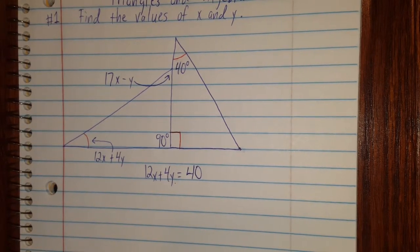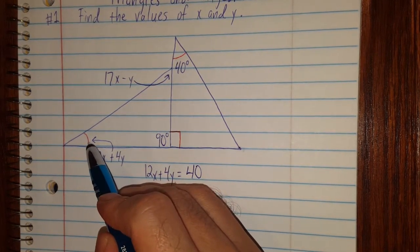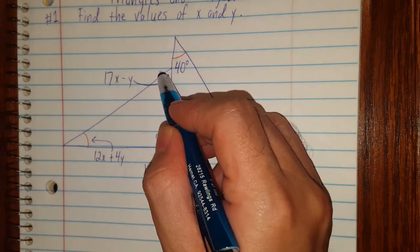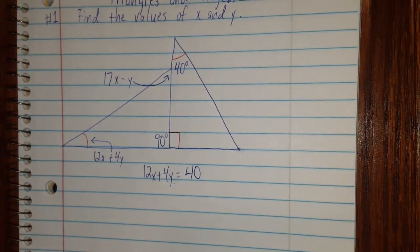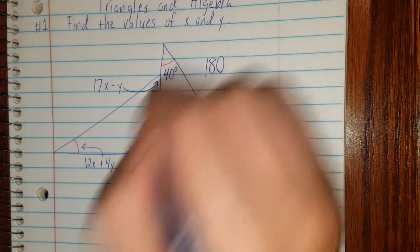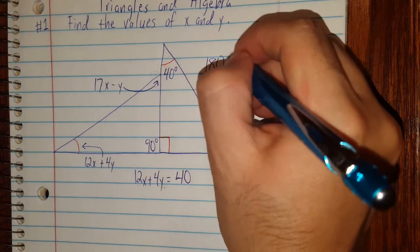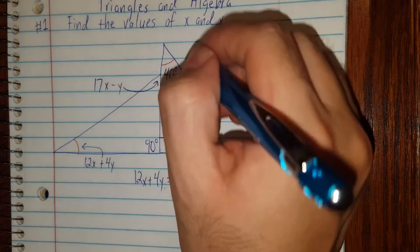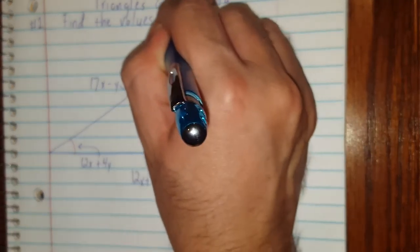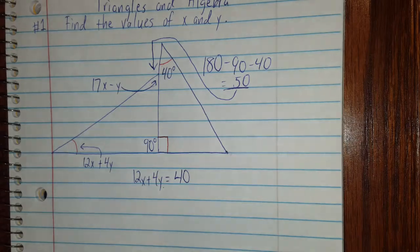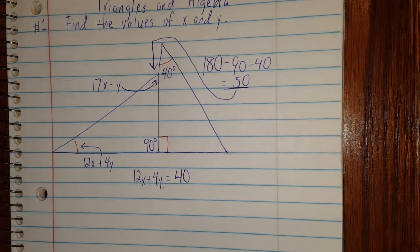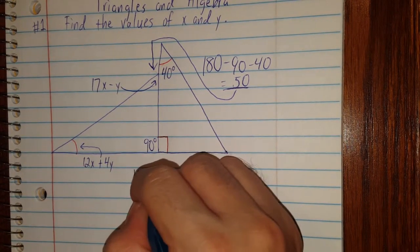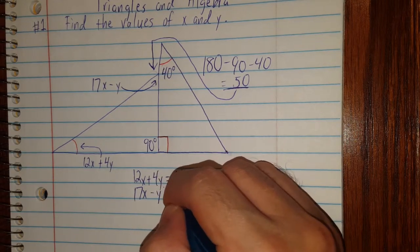Okay, so why does that help me? Because I know that this one is 90, this one is 40, this one's 40, so is that. So what I can do is figure out what this angle right here is by doing 180, that's the total number of degrees in a triangle, minus 90 minus 40, and when I do that I get 50. So this angle right here, even though it's given by 17x minus y, the actual measure of it is 50. So because I know that now, I can write the second equation that I need: 17x minus y equals 50.